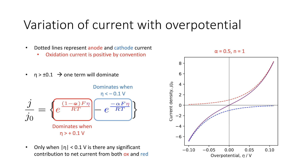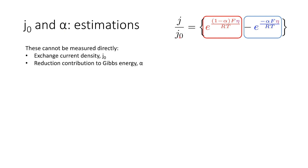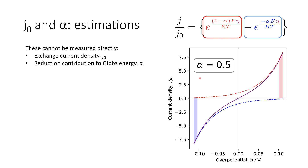What we now need to do is think about what J0, the exchange current density, and this symmetry component alpha are. Our exchange current density and our symmetry factor alpha cannot be measured directly. The exchange current density is simply what the current is at equilibrium, while the alpha component is simply a reduction contribution to the Gibbs energy. The greater alpha is — remember this is a proportion, a fraction — the greater the reductive component to the overall Gibbs energy. At alpha equals 0.5, the reductive and oxidative processes contribute equally to the overall current we observe.